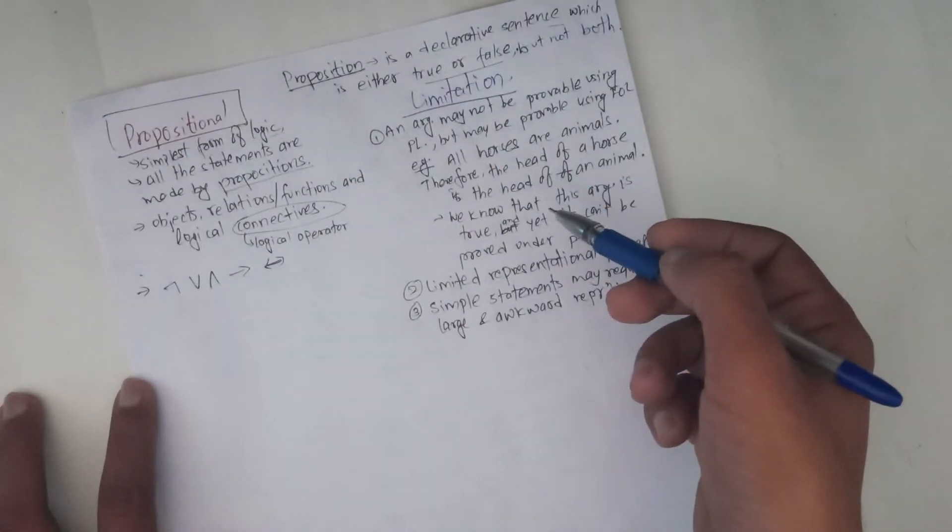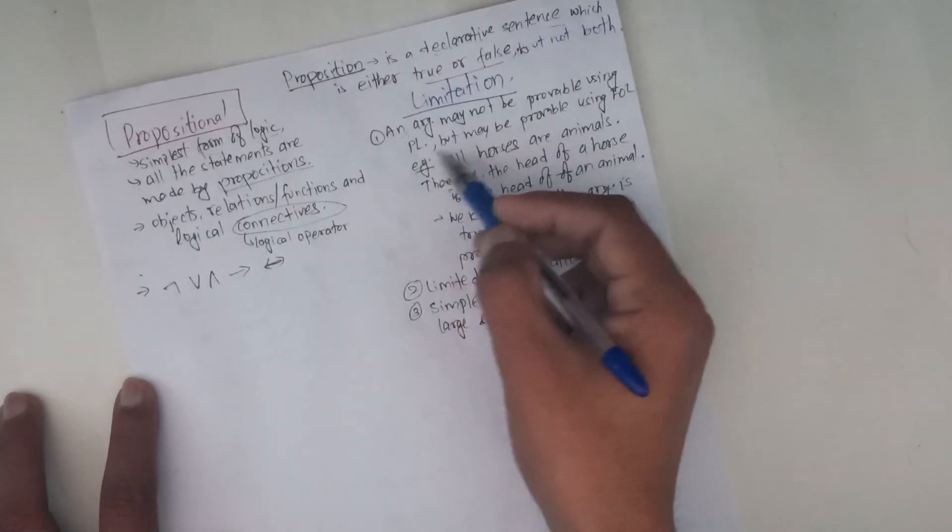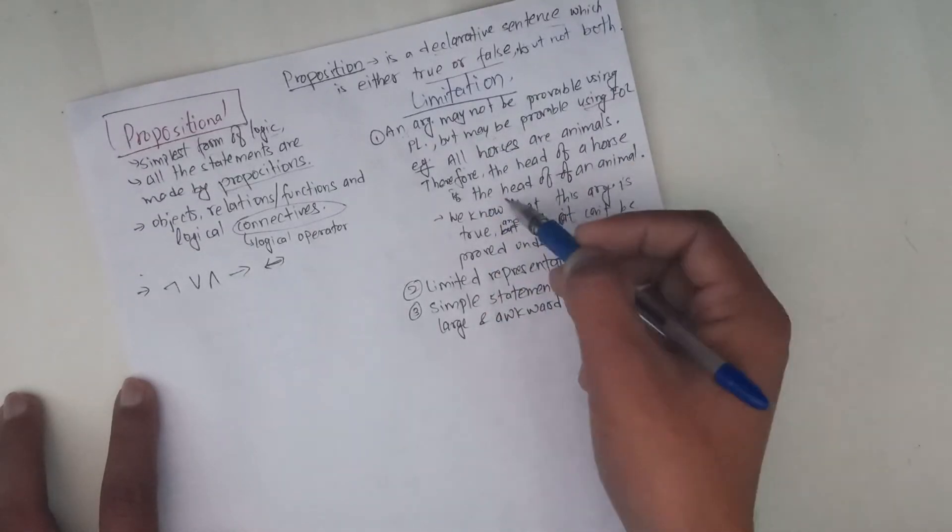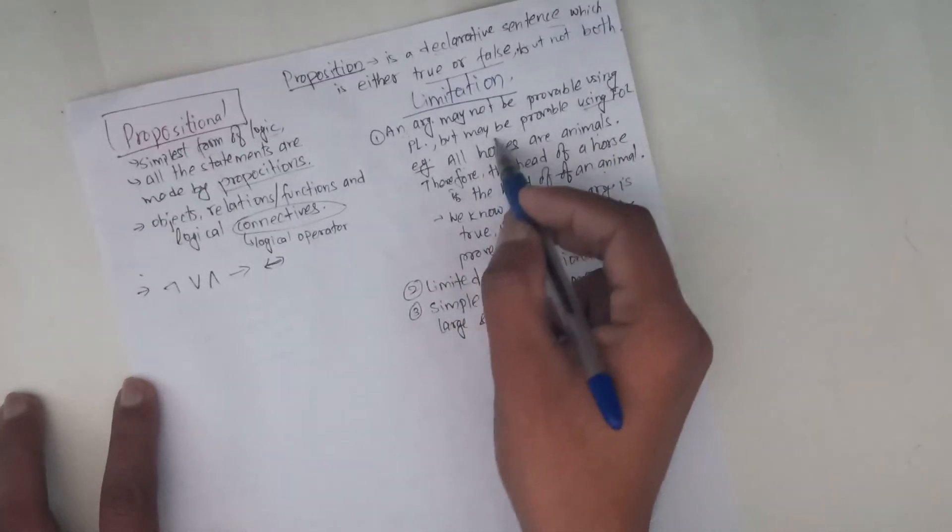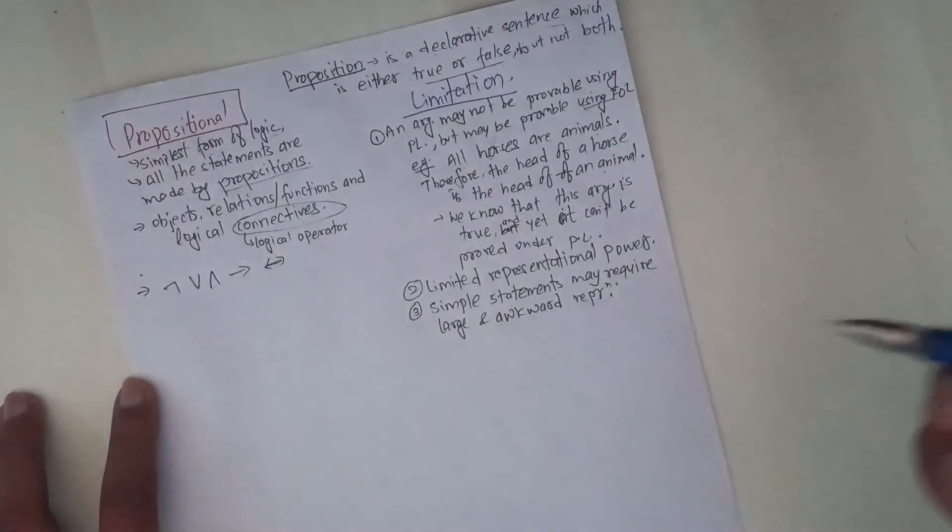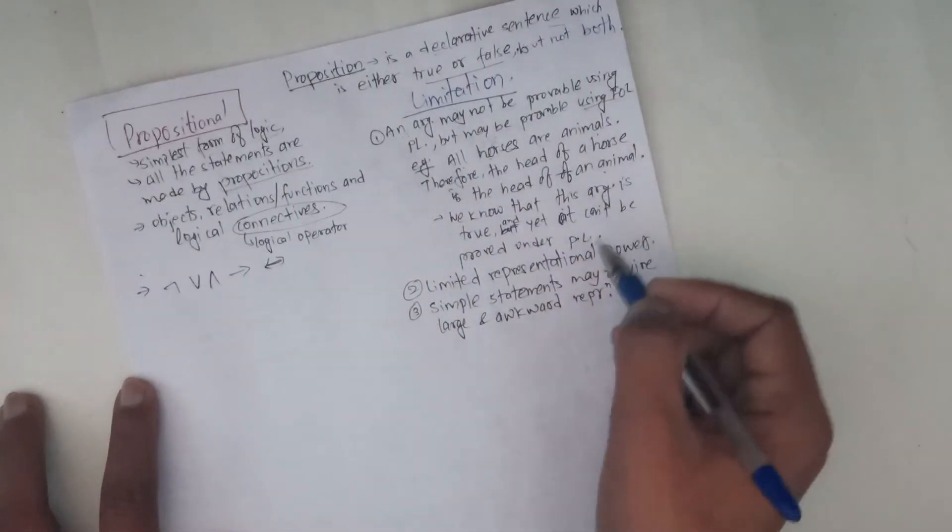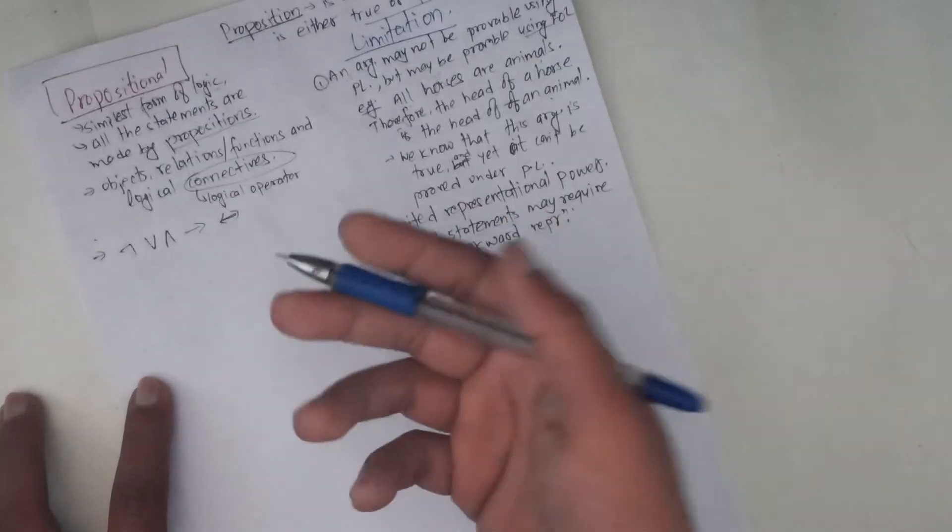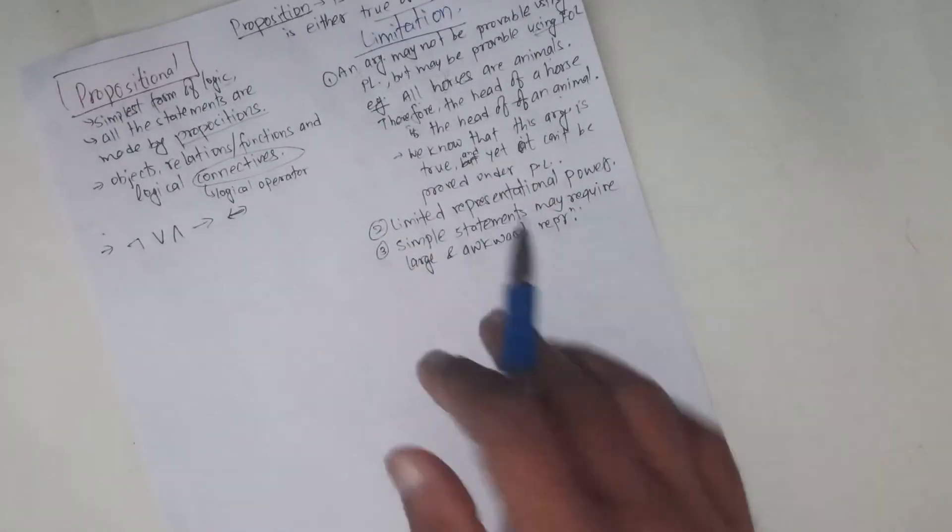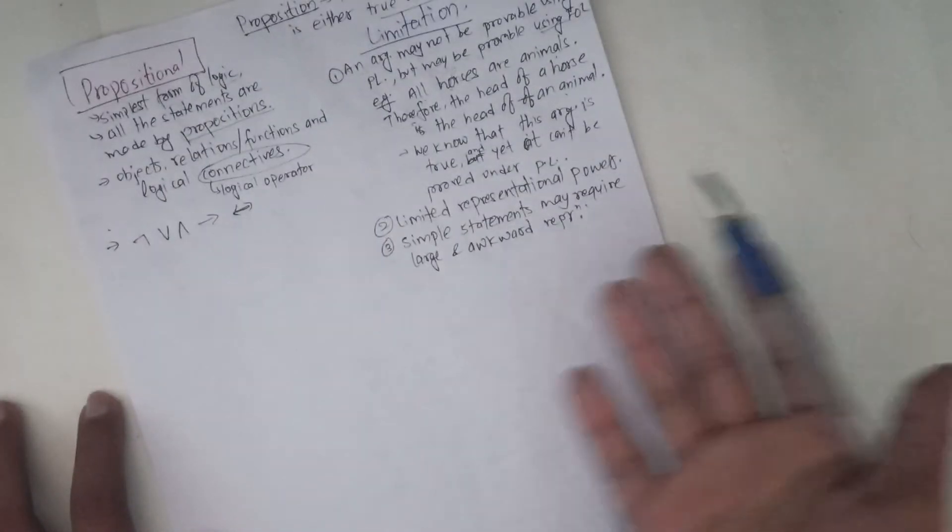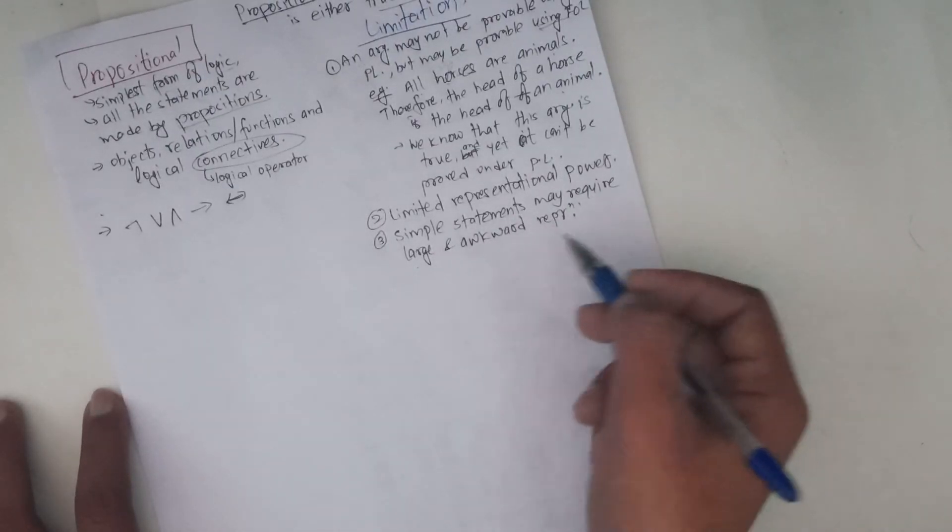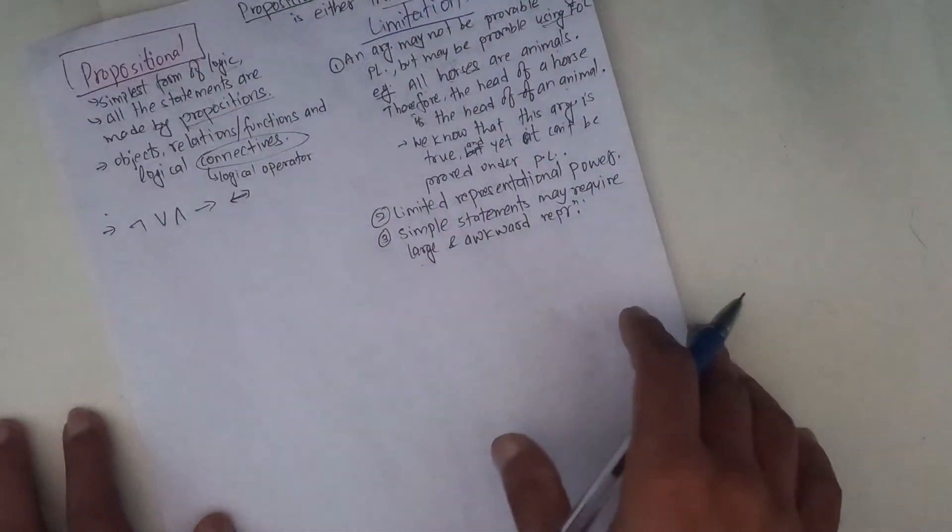Arguments may not be provable using propositional logic. All horses are animals, therefore the horse is an animal. We know this argument is correct and true, but it has limited representation power. Statements like all, some, cats are unique, intelligent, some students - simple statements may require large representation.